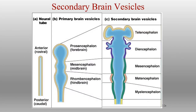We move on to the telencephalon and diencephalon coming from the prosencephalon. We have the mesencephalon, the metencephalon, and the myelencephalon. The mesencephalon stays essentially the same through the entire development. The metencephalon and myelencephalon develop from the rhombencephalon, and the metencephalon is also going to give rise to the pons.